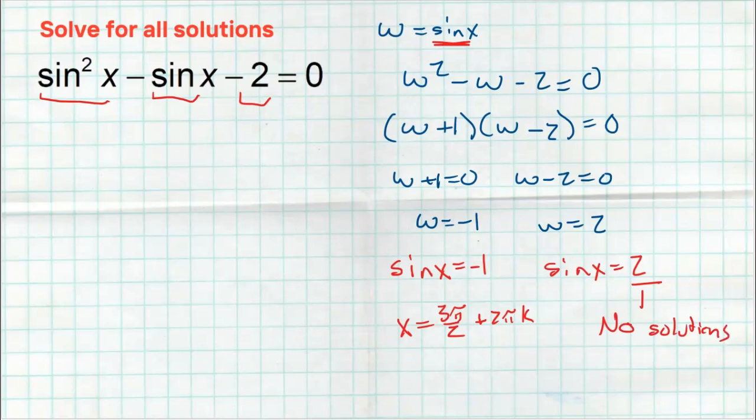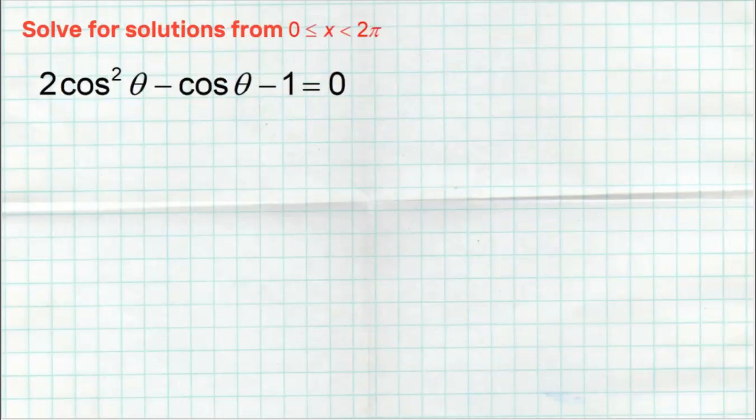So the only answer is three pi over two, plus two pi·k representing a full circle as many times as we want.